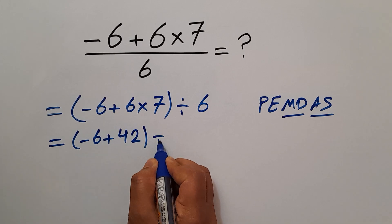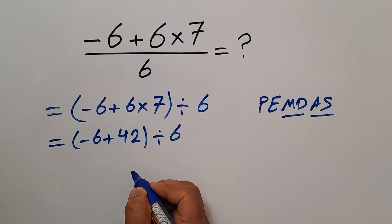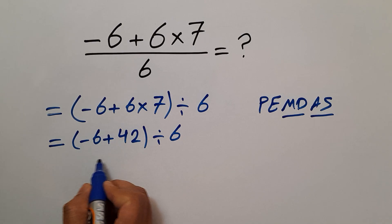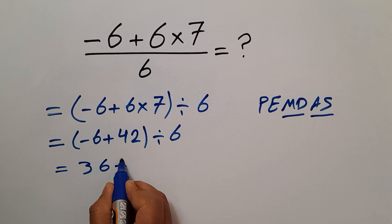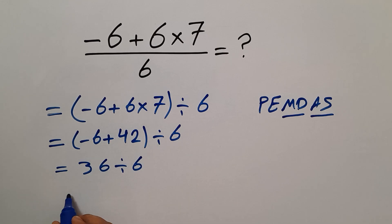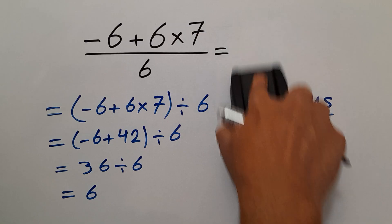Divided by 6. Now, negative 6 plus 42 equals 36, so 36 divided by 6, and this is equal to 6. So our final answer to this problem is 6.